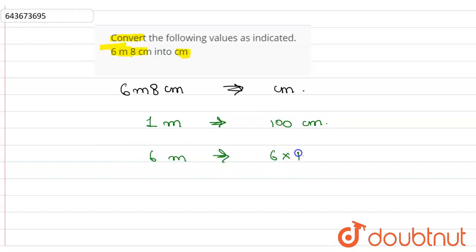Now here in this we need to add eight centimeter as well. So that means we will add 600 plus 8, which will be equal to 608 centimeter. This is the correct and the required answer. Hope you understood this.